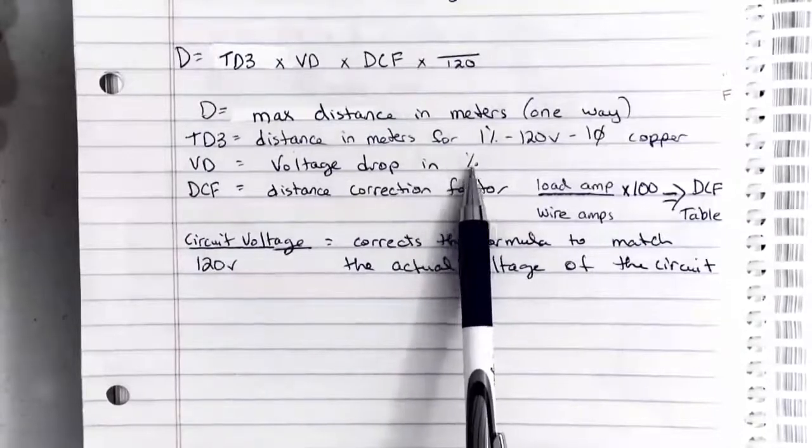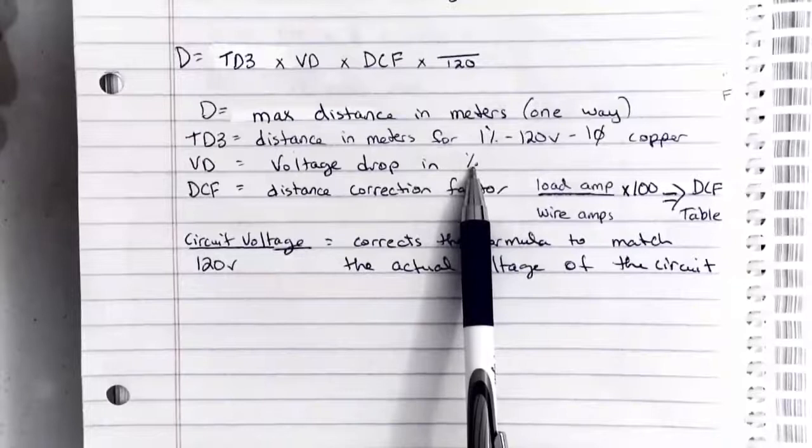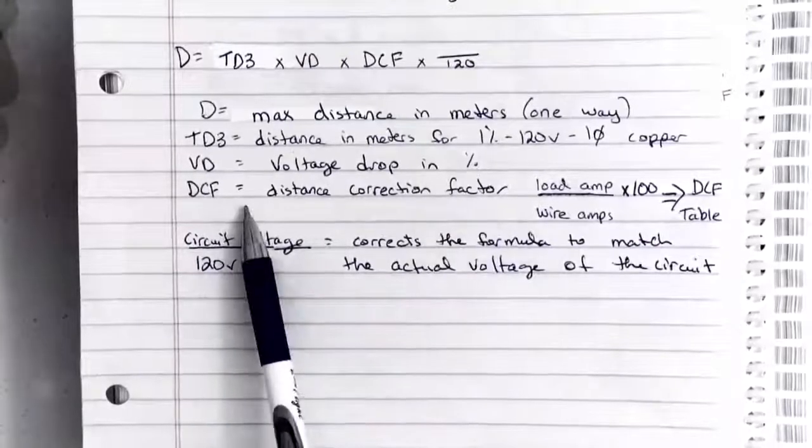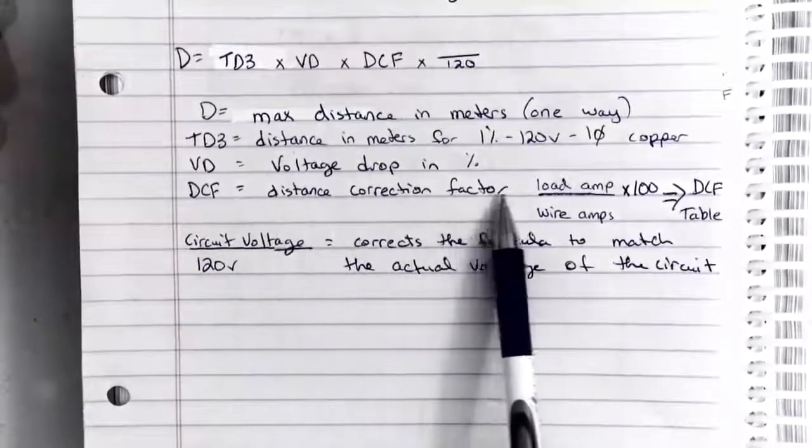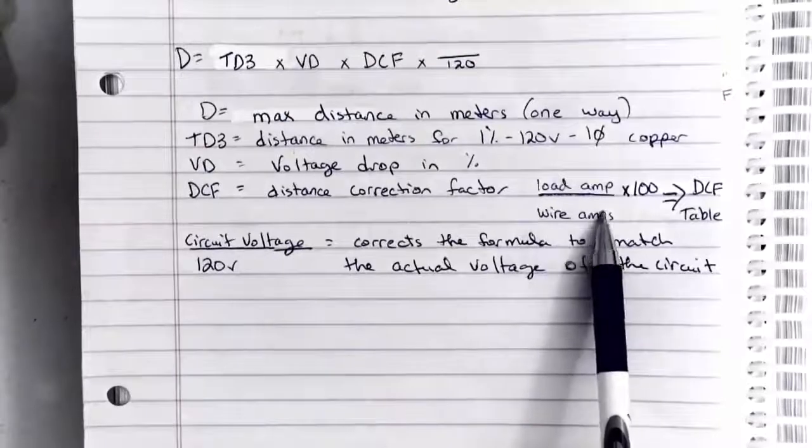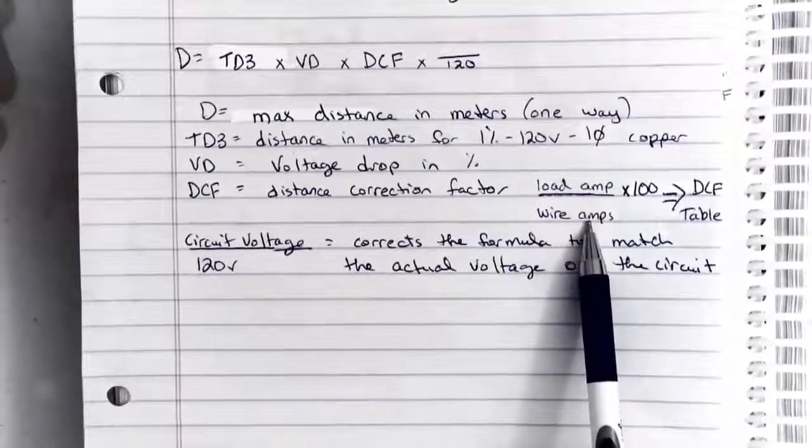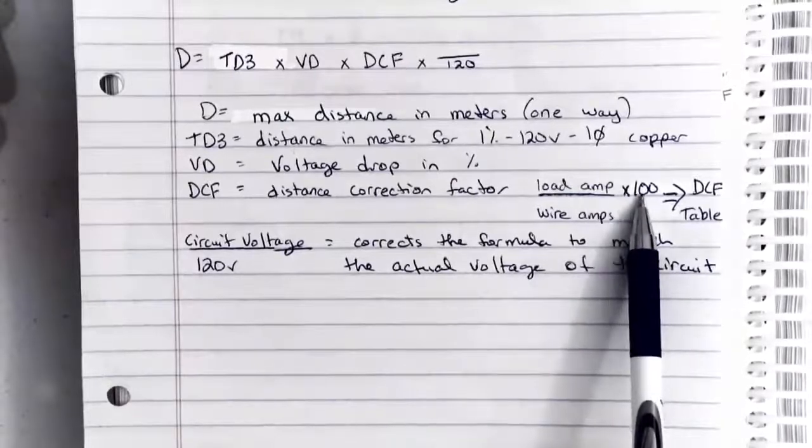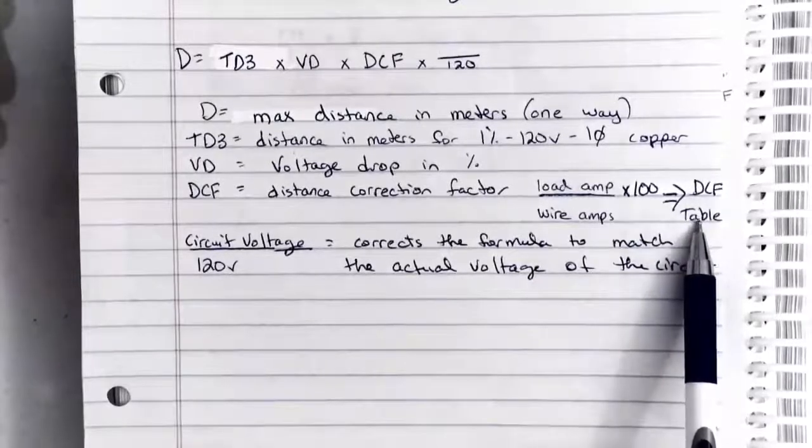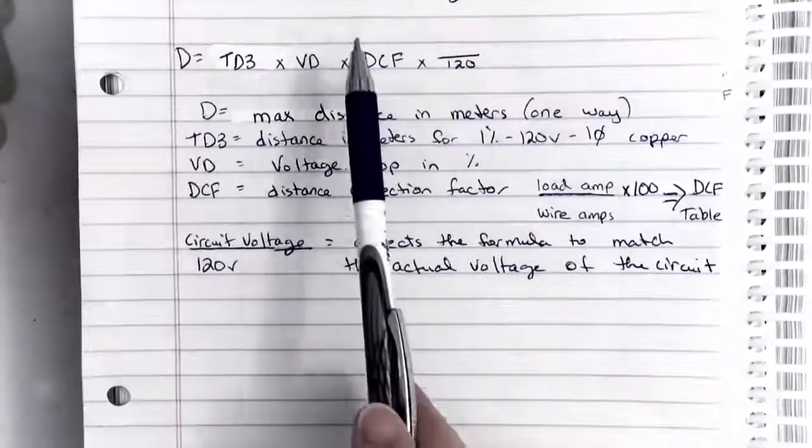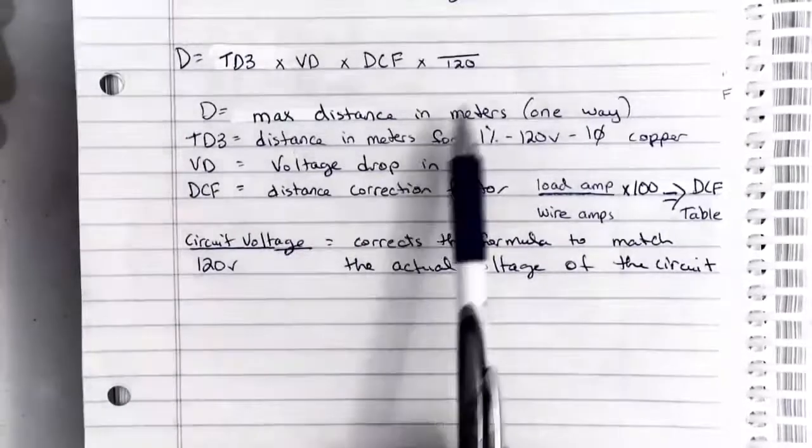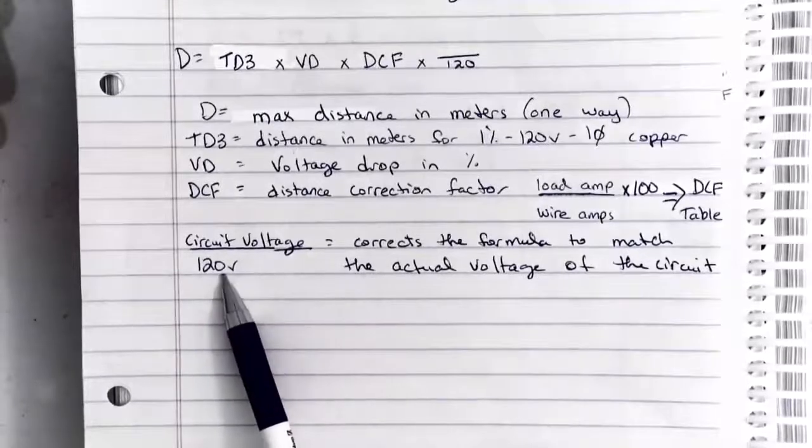The voltage drop is in percent, so we don't change that to a decimal value. We leave that in percent. So if it's 3%, we just put the number 3 in this calculation, not decimal 0.03. And the distance correction factor is found this way: we take the load amperage divided by the capability of the wire that we're using, so the wire amperage, multiply that by 100 and we get a percentage. We're going to then take that percentage to the DCF table and look up the value that we would put in our formula up here for DCF. And the last piece was the circuit voltage, the actual circuit voltage divided by 120.